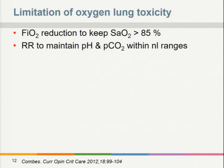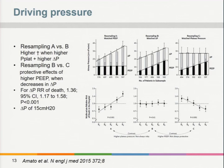Driving pressure is a key parameter. Driving pressure equals plateau pressure minus PEEP. It has been shown to be the best predictor of in-hospital mortality in ARDS patients. In the study by Amato, patients were observed for high driving pressures versus high plateau pressures and differences in PEEP. Higher plateau pressures and higher driving pressures were associated with higher mortality. Conversely, higher PEEP that resulted in a decrease in driving pressure had a protective effect. Driving pressure was the only independent predictor of risk of death.